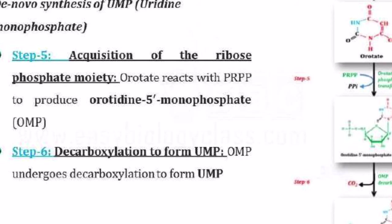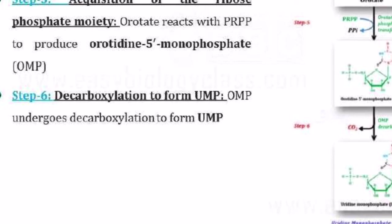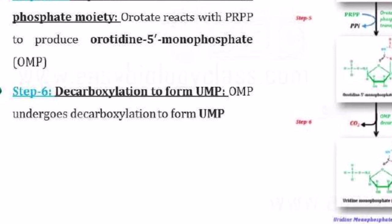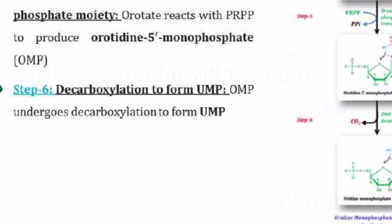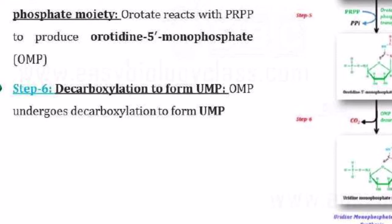Now OMP undergoes decarboxylation — 'de' means removal and 'carboxylation' means carboxyl group — so the carboxyl group attached will release as carbon dioxide. OMP is then converted into UMP, uridine monophosphate. So now you have UMP with a phosphate group, sugar group, and nitrogenous base, which is your pyrimidine nucleotide form. OMP is finally converted into UMP.